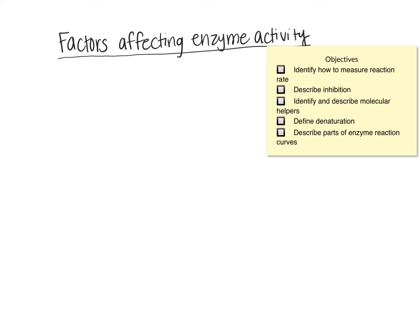At the beginning of our lesson on enzymes, we had a generalized equation to show the progress of a reaction. In this equation, E represented the enzyme, S represented the substrate, ES together represented the transition state — our enzyme-substrate complex — and at the end of the reaction, you had the enzyme free to do its job again, and you had the products.